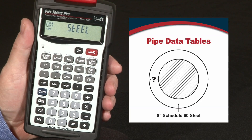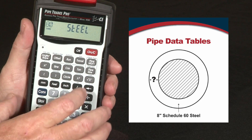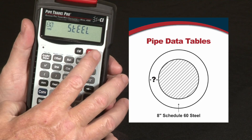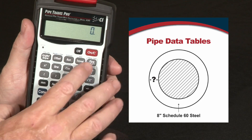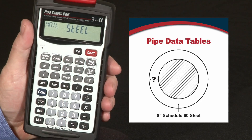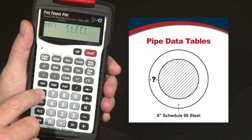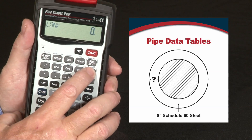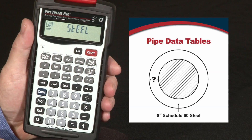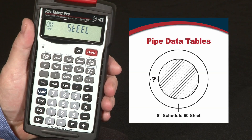Once you have selected your pipe material and pipe type, you can enter a pipe size and see the corresponding data. So let's just start at the beginning: we've got pipe material — steel — select our pipe type using convert and pipe size — Schedule 80.